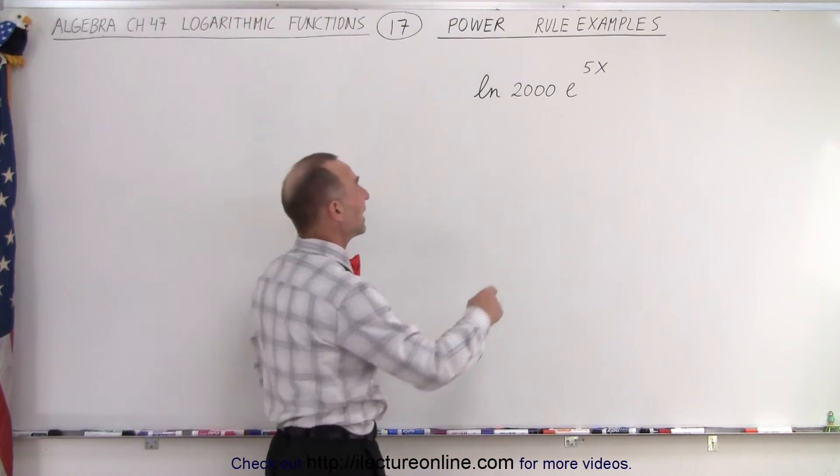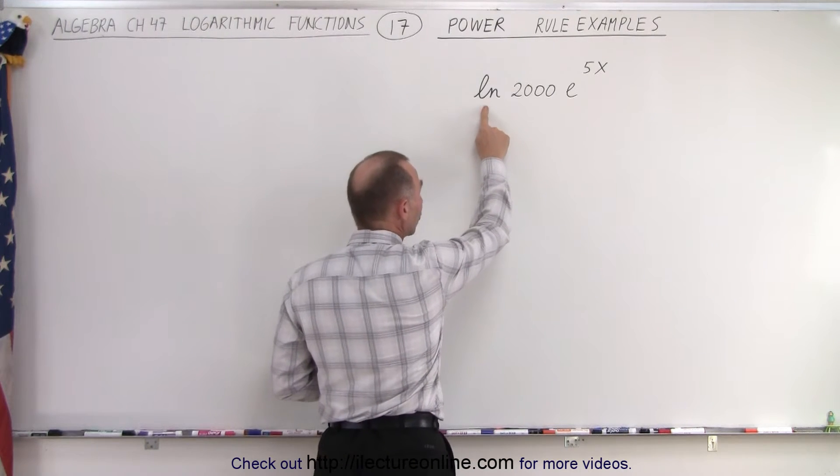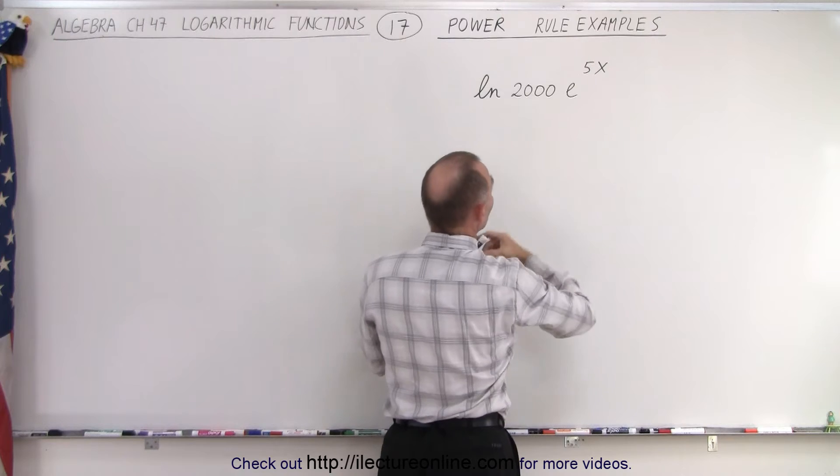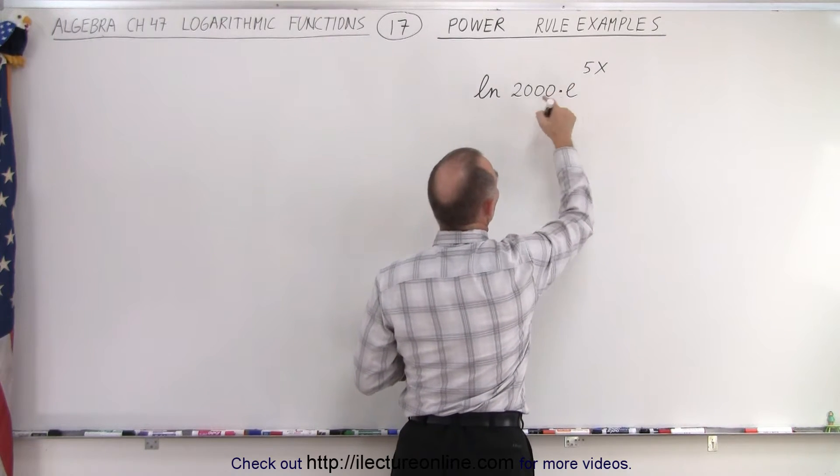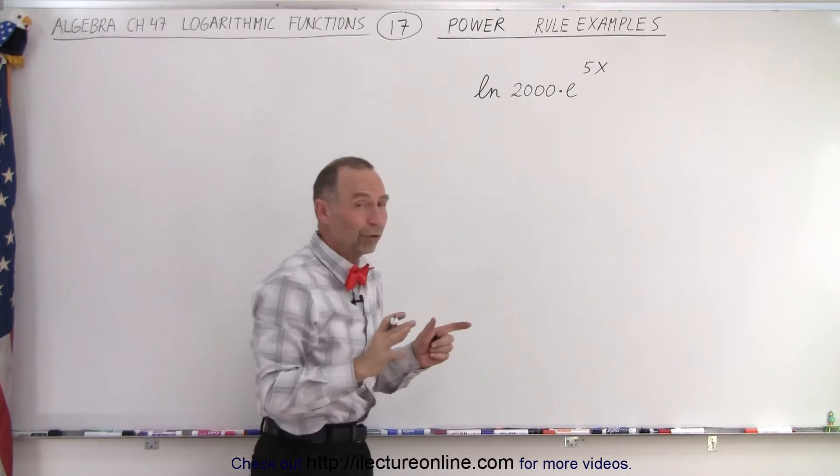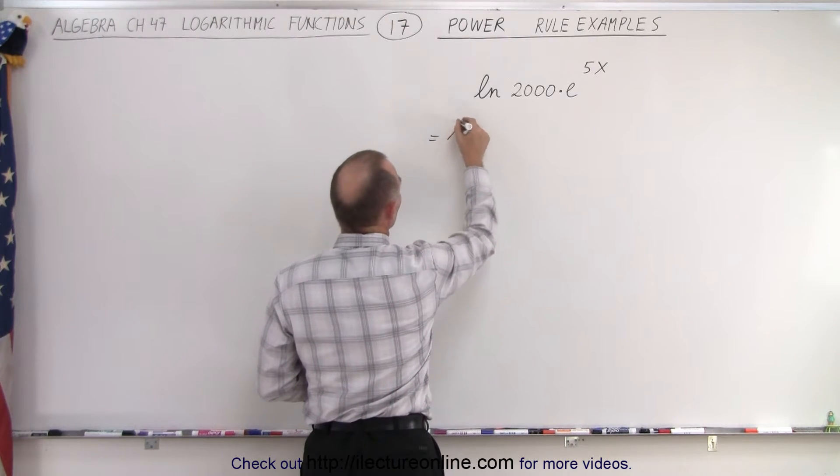First of all, we should notice that we're taking the natural log of a product: 2,000 times e to the 5x. So we notice there's a product here, so first we take care of the product. This is equal to